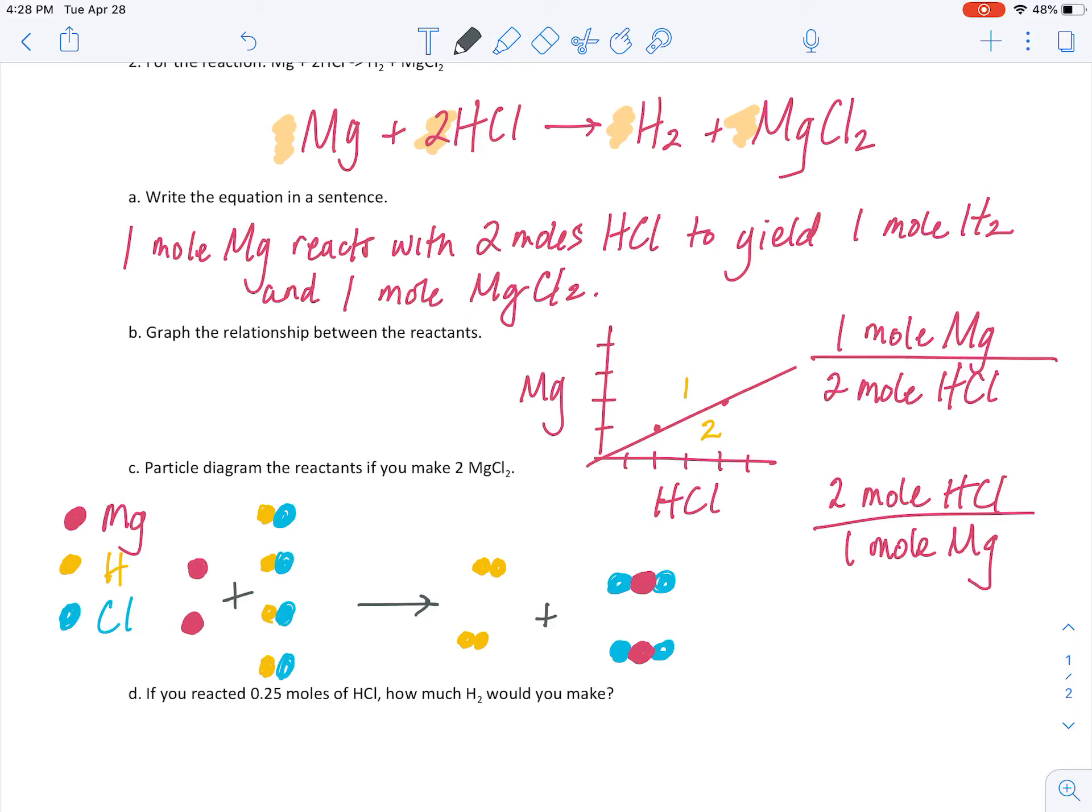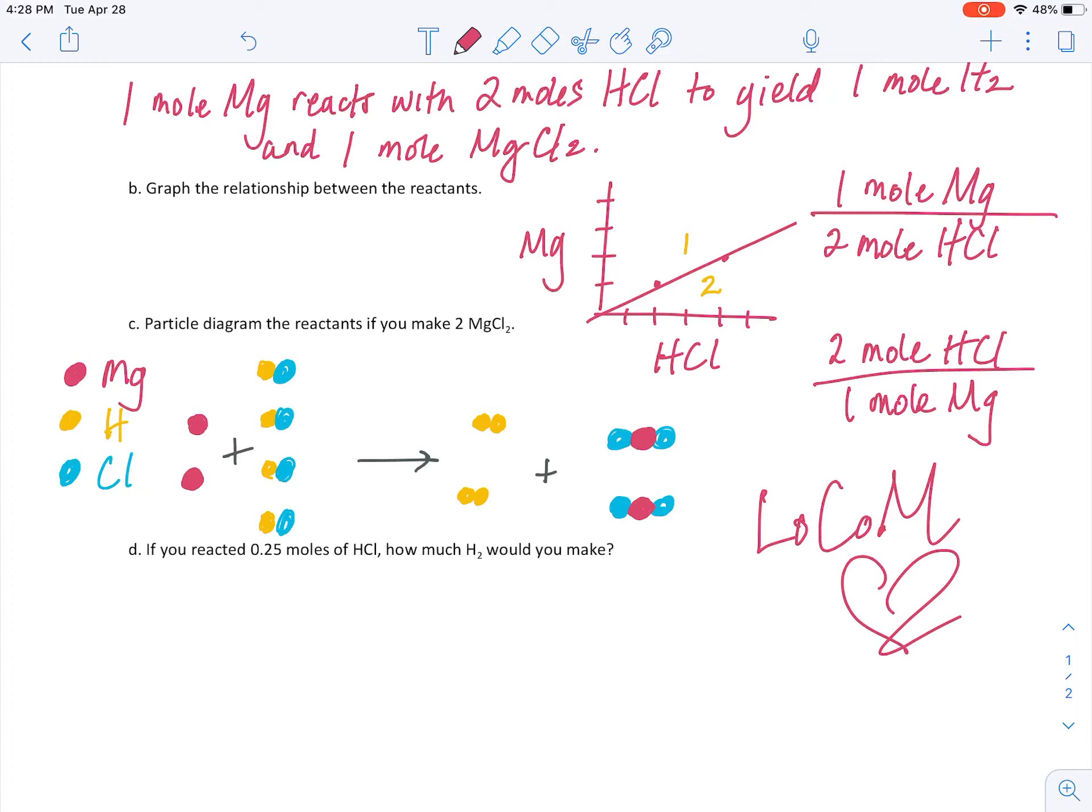And, what you should see here is that when we compare the number and type of particles in the reactants, they are the same as the number and type of particles in the products. So, the particles are rearranged, obviously, but they are conserved because when all else fails, we should always follow the law, which is LOCOM, forever, law of conservation of mass, law of conservation of particles. All right, so we have shown the graphical relationship between reactants, and we're also showing the visual representation through a particle diagram for those reactants. And, now we're going to solve it mathematically.